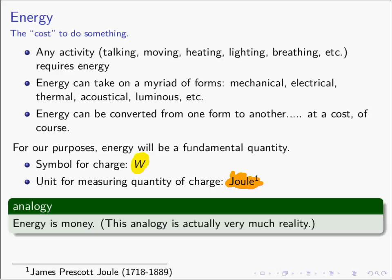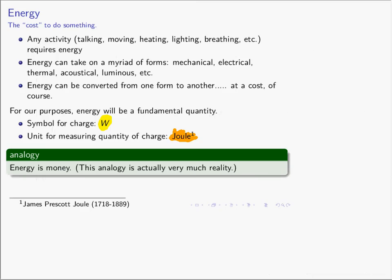Joule was a scientist in the 18th century. We need our analogy to go along with this. Since energy is a cost to do something — any verb requires a cost to be paid — energy is money. This analogy is actually very much reality. When you get the bill at the end of the month to keep the lights on, what you end up paying for are kilowatt-hours, and that is simply an amount of energy. So you don't pay the power bill — you are paying the energy bill.